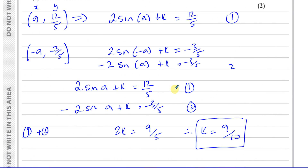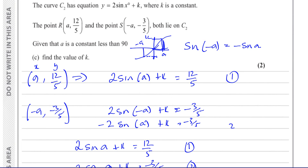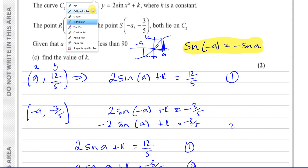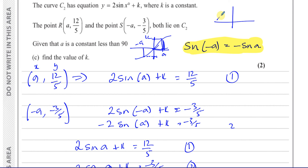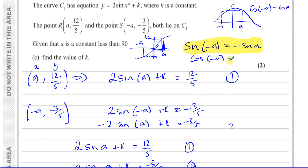The key is understanding this important principle from the trig curves. For the sine curve: sin(−a) equals −sin(a). For the cosine curve, which is symmetrical about the y-axis: cos(−a) equals cos(a). So cos(−60) has the same value as cos(60). When you go into P2 there's more detail on this, but we should have this basic understanding: sin(−a) = −sin(a) and cos(−a) = cos(a). This helps with certain questions like this one.